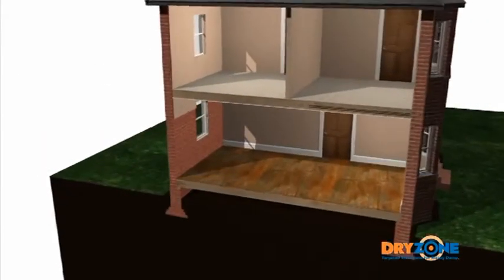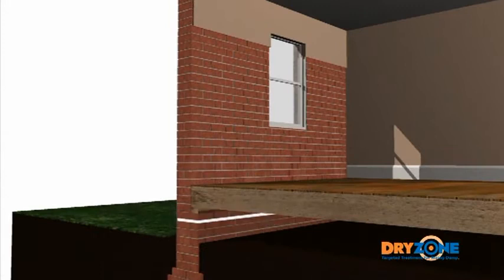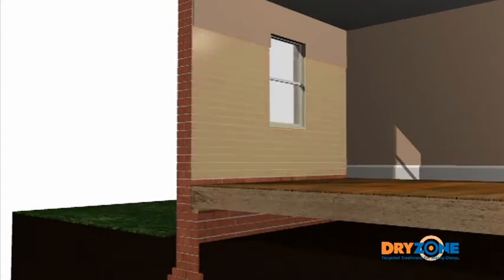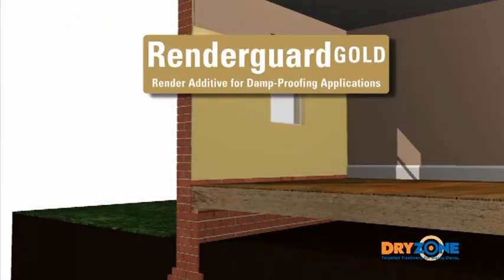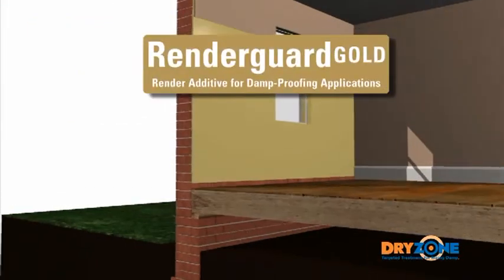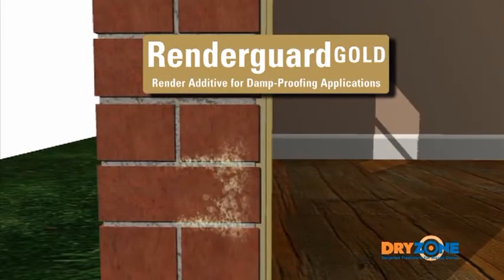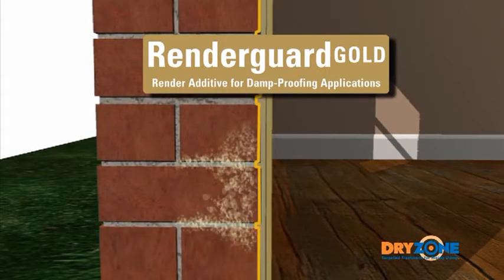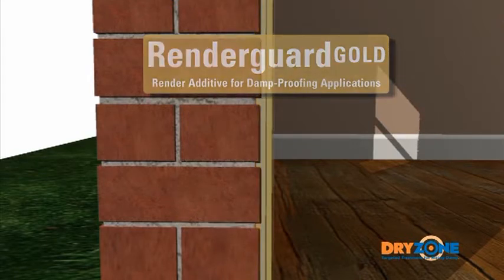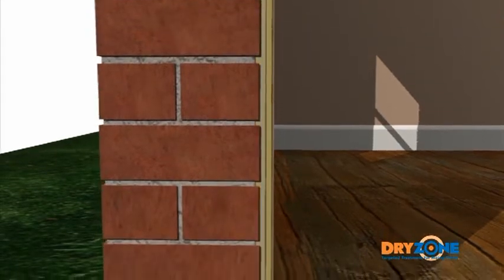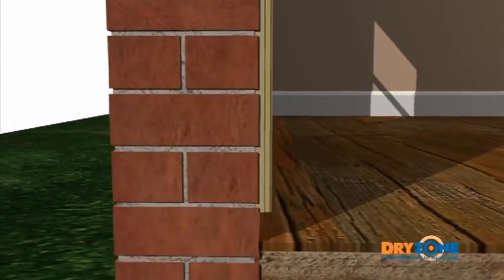Once the new Dryzone damp-proof course is in place, the wall will need to be re-plastered. Two coats of sand cement render, incorporating RenderGuard gold, should be applied. This specially designed plasterwork prevents the passage of hygroscopic salts from the underlying masonry. A layer of finishing plaster is then applied to give a smooth surface for decorative purposes.